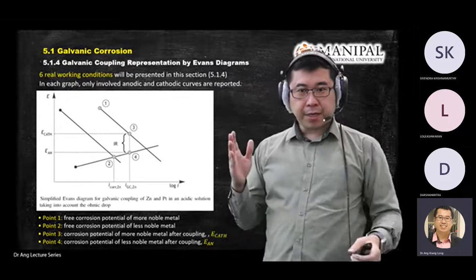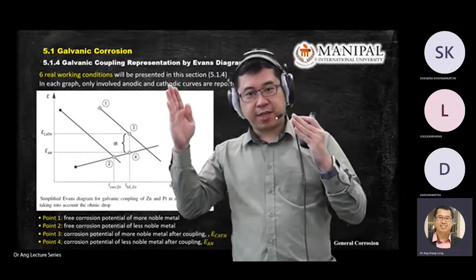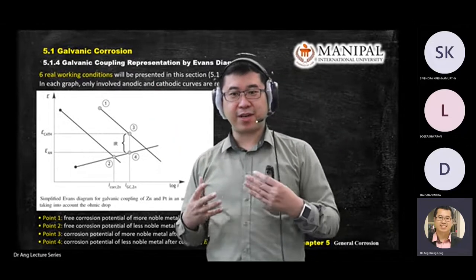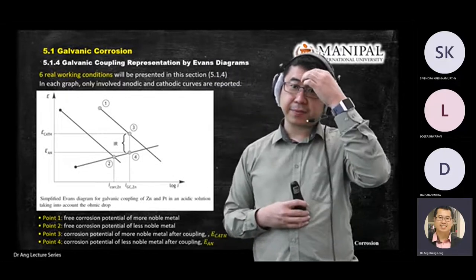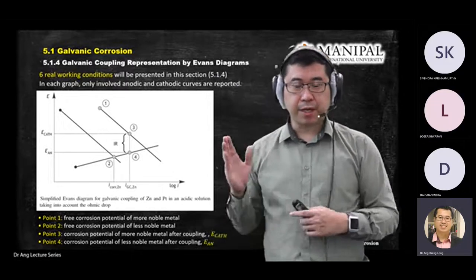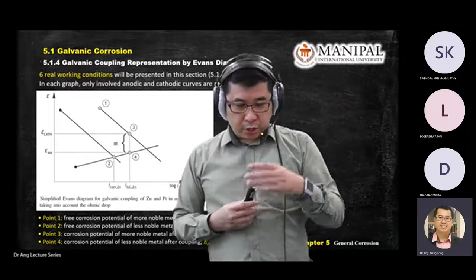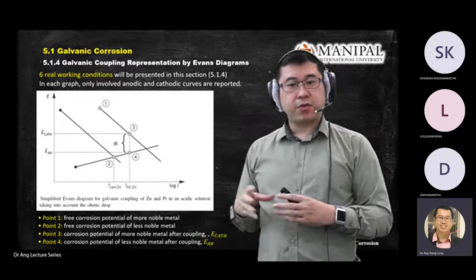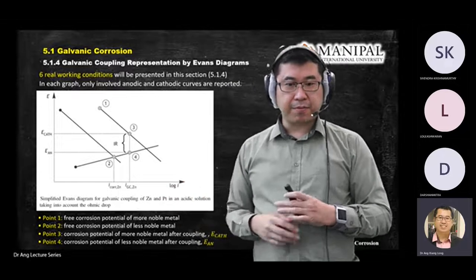Any questions about the principles of galvanic corrosion, acidic solution, or alkaline solution? Everyone clear? Good. Now let's look at this graph. You will be given zinc and platinum. In the exam you are also given two metals.